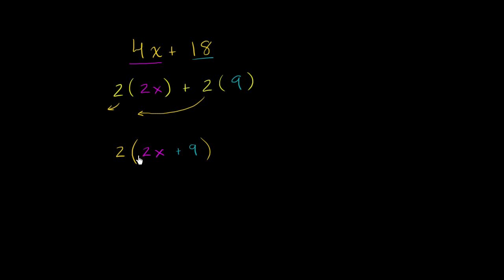And if you wanted to multiply this out, it would be 2 times 2x plus 2 times 9. It would be exactly this, which you would simplify as this right up here. So there we have it. We have written this as the product of two expressions.